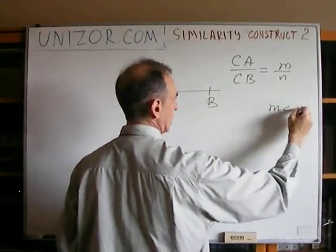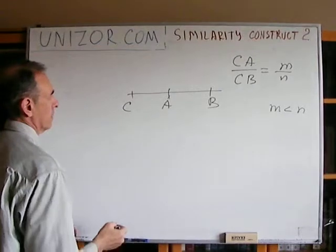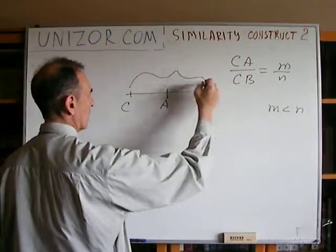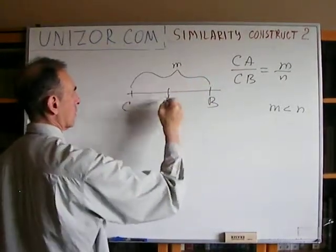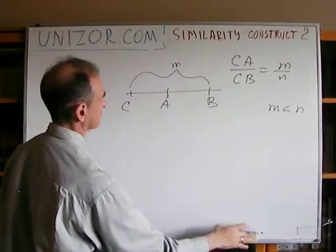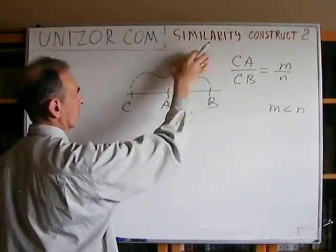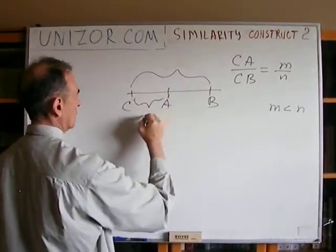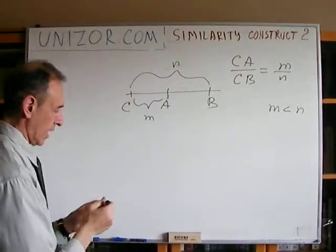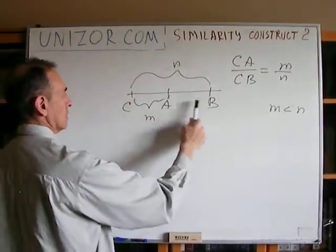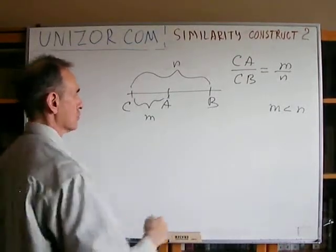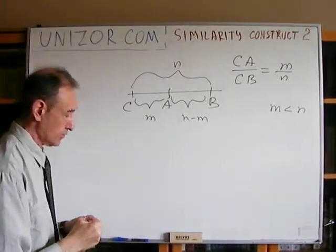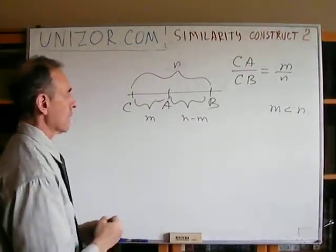Let's consider the case M less than N. If CA is proportional to M and CB proportional to N, then obviously the segment AB should be proportional to N minus M. From this, I can derive my construction method very easily.